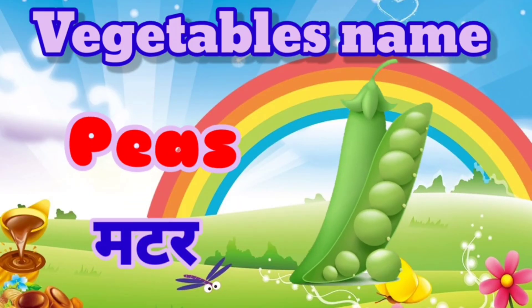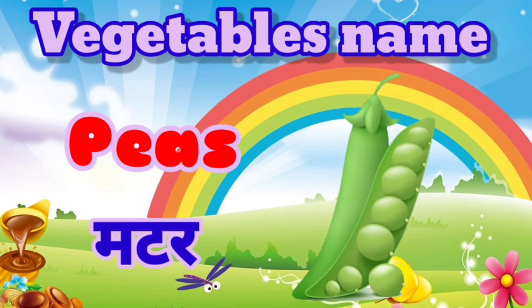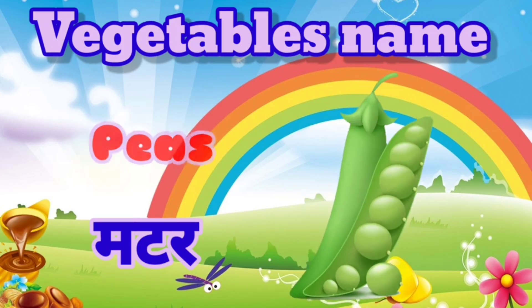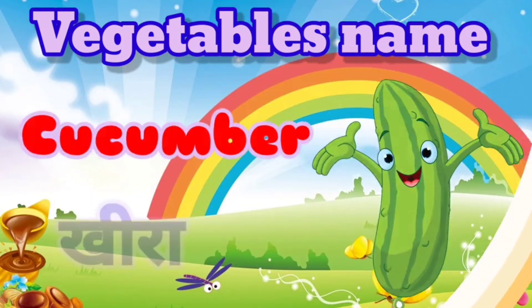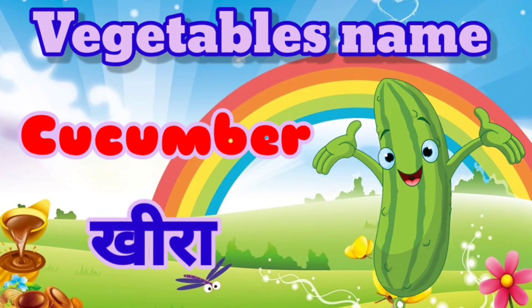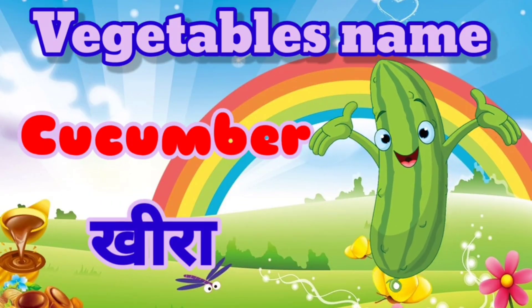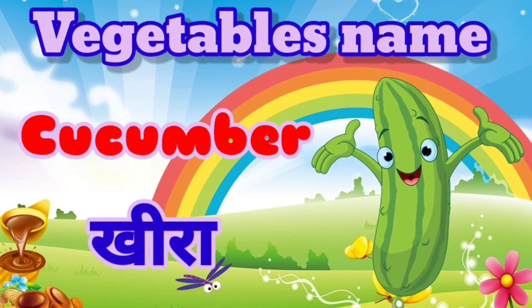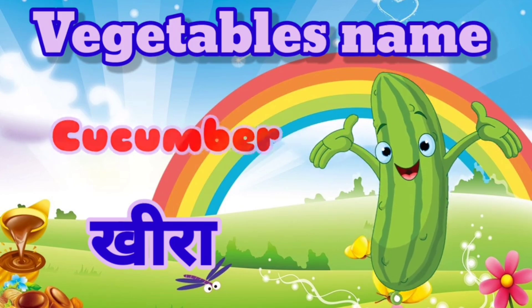Peas. Peas means Matar. Cucumber. Cucumber means Kheera.